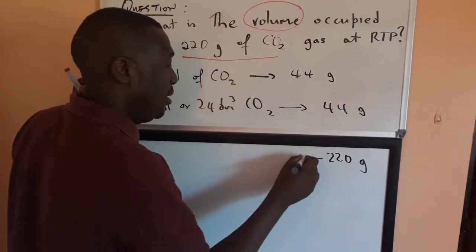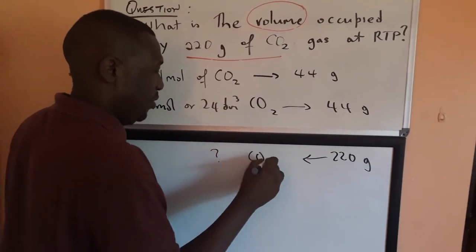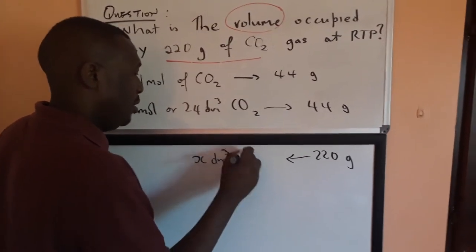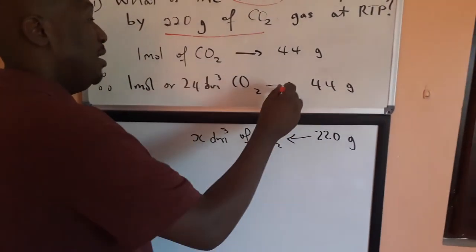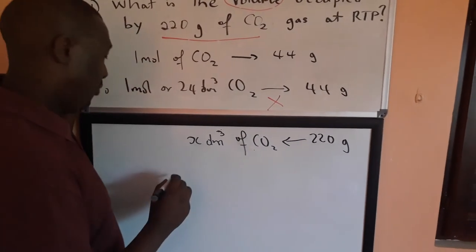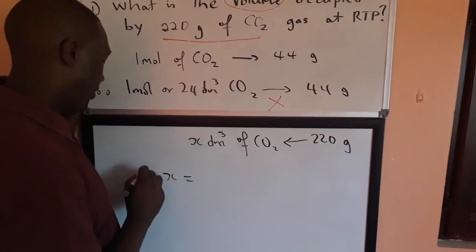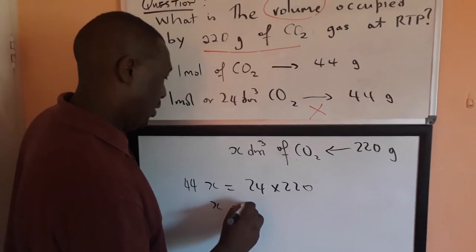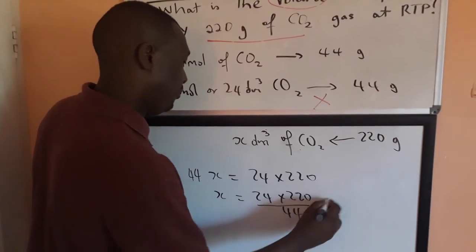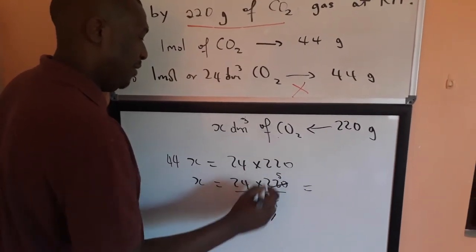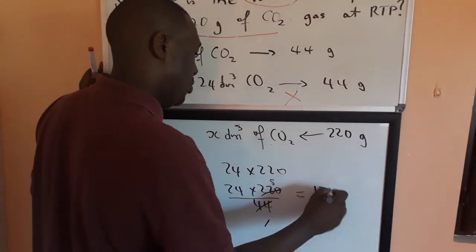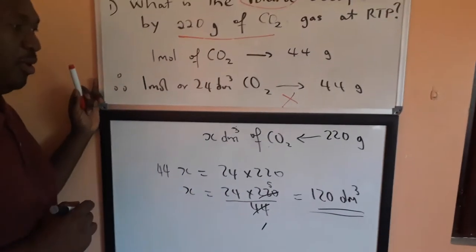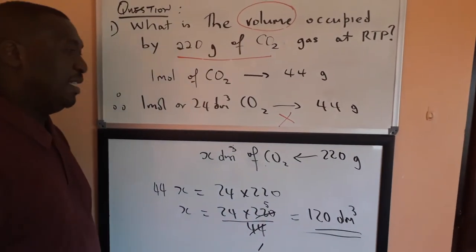220 grams is what volume of CO2? Let's call that x decimetre cubed of CO2. We can cross-multiply to get our volume: 44x = 24 × 220. So x = (24 × 220) / 44 = 120 decimetre cubed. That is our volume occupied — and that's the short way of relating them.